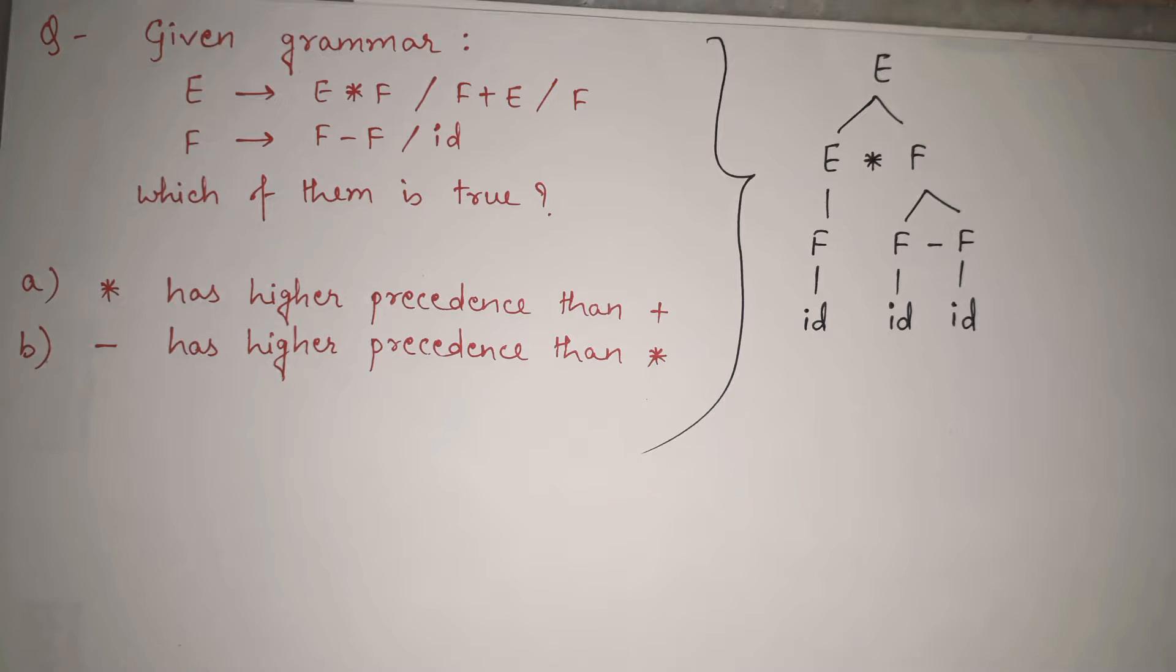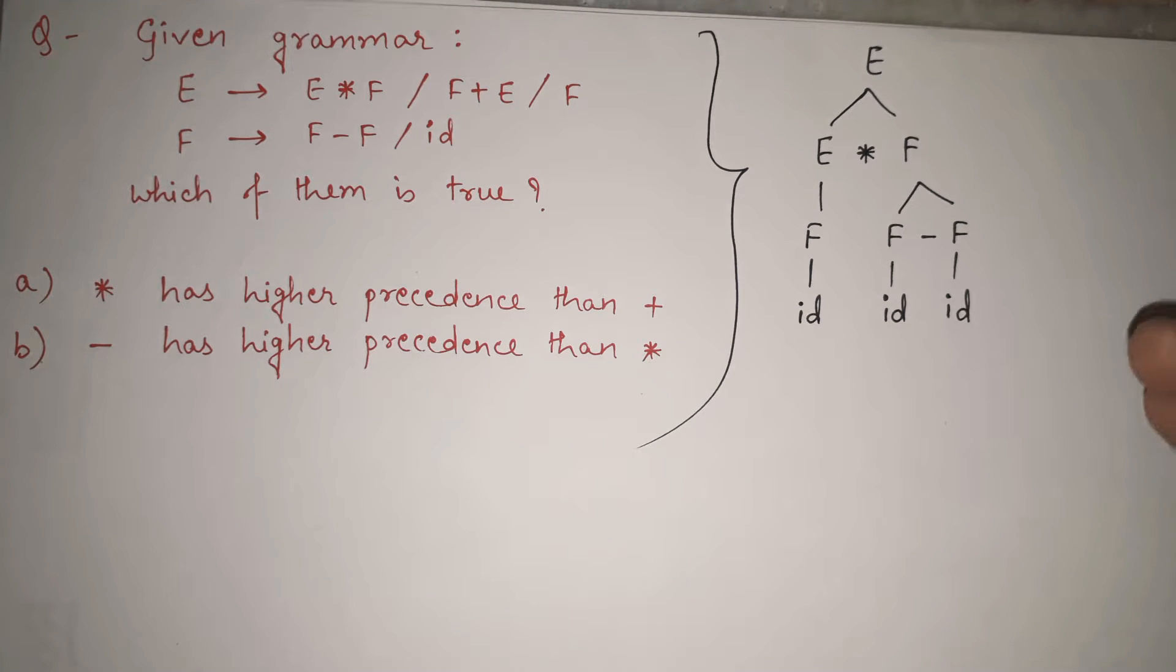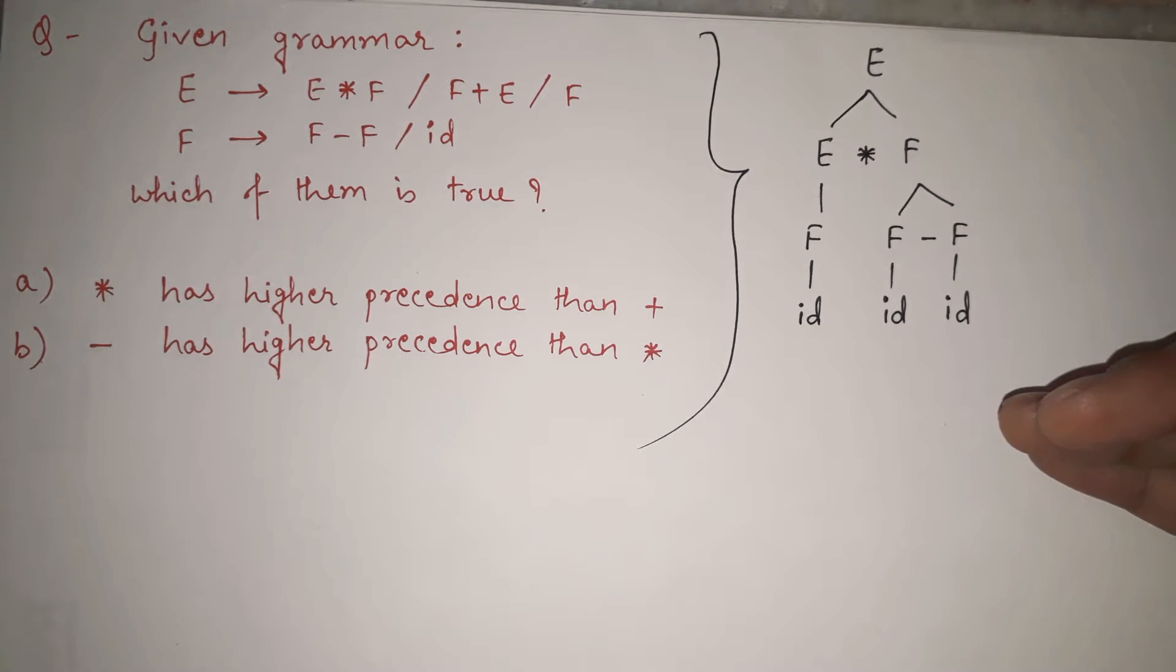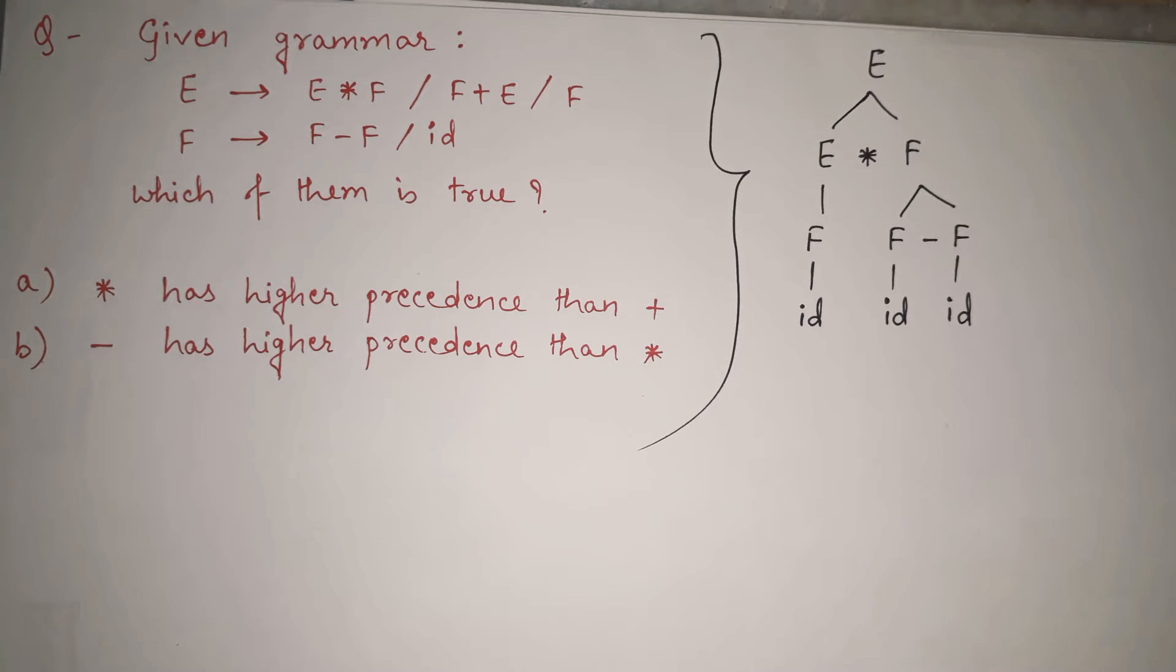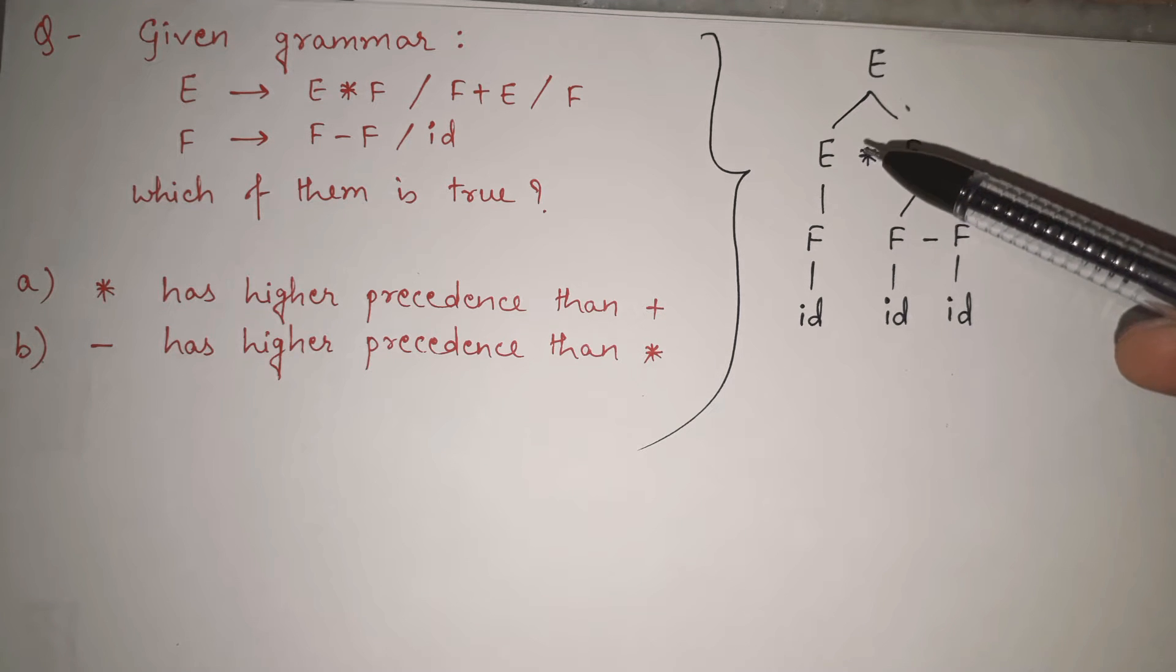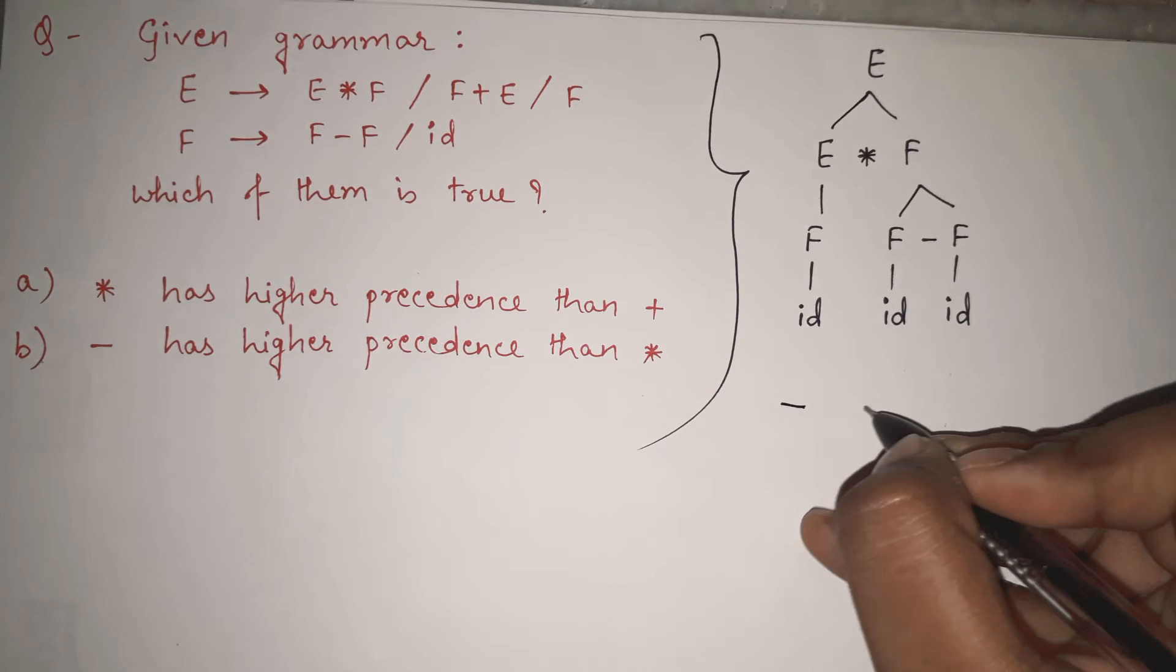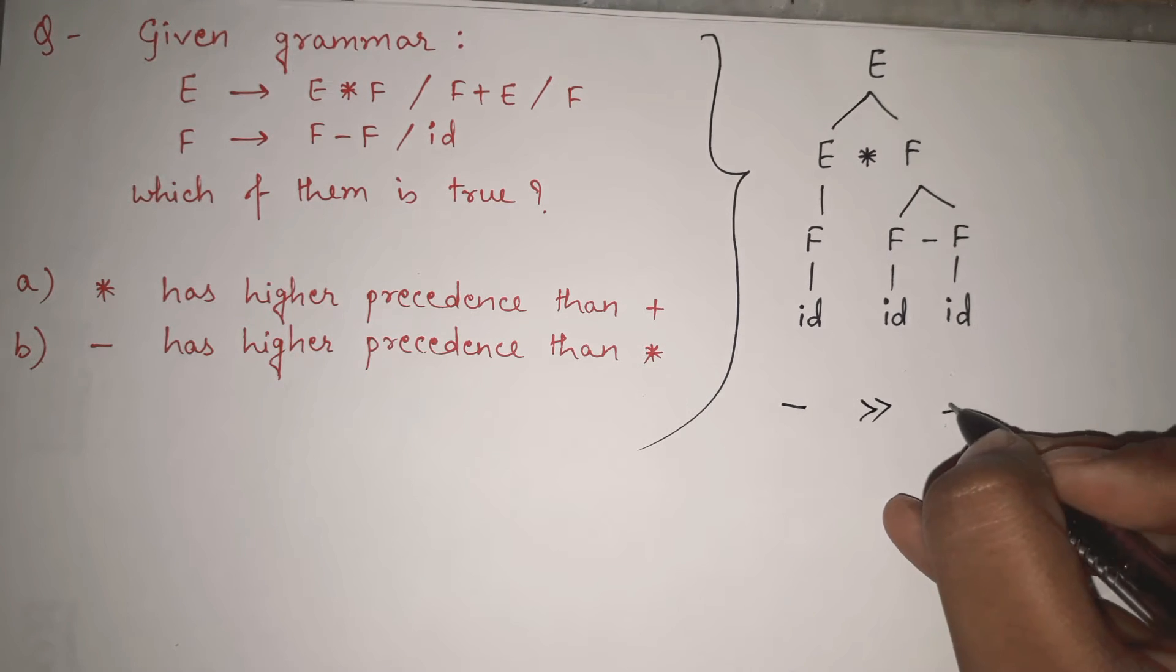Now after making tree we know how to check the precedence. In the tree the evaluation starts from bottom, bottom to top. So in this case, whichever operator is at the bottom, its precedence is more. So in this case minus is there and then if we pass from bottom, so first of all we are having minus and then we are having star. So according to this what we can say is the precedence of minus is greater than the precedence of star.